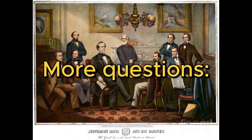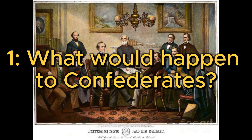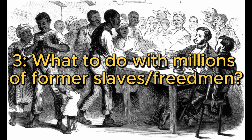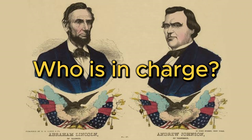With those questions answered, others would appear. For example, what would happen to the former Confederates since they had committed treason? What would the process be for readmitting the southern states into the Union? Finally, what is going to happen with the millions of former slaves, also known as freedmen? A major debate during Reconstruction would be over who controlled the process — the President or Congress — and that dispute brought about the various stages of the period.